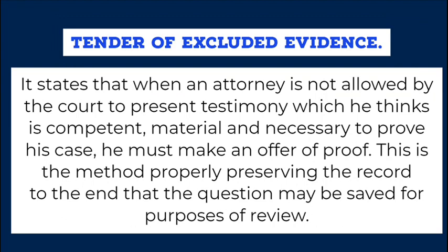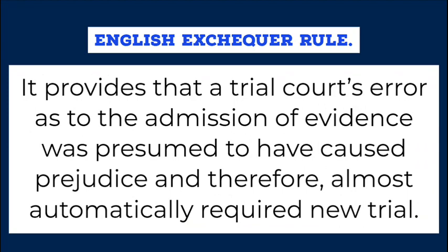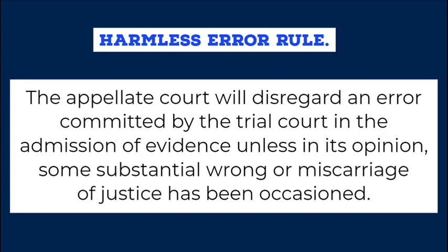Tender of Excluded Evidence. It states that when an attorney is not allowed by the court to present testimony which he thinks is competent, material, and necessary to prove his case, he must make an offer of proof. This is the method of properly preserving the record, to the end that the question may be saved for purposes of review. English Exchequer Rule. It provides that a trial court's error as to the admission of evidence was presumed to have caused prejudice and therefore almost automatically required a new trial. Harmless Error Rule. The appellate court will disregard an error committed by the trial court in the admission of evidence unless, in its opinion, some substantial wrong or miscarriage of justice has been occasioned.